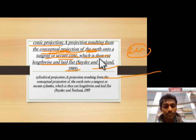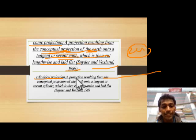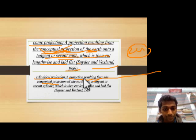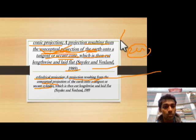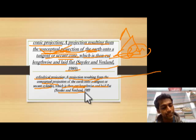Cylindrical projection: it is a projection resulting from the conceptual projection of the Earth onto a tangent or secant cylinder, which is then cut lengthwise and laid flat. (Snyder and Voxland, 1989.)